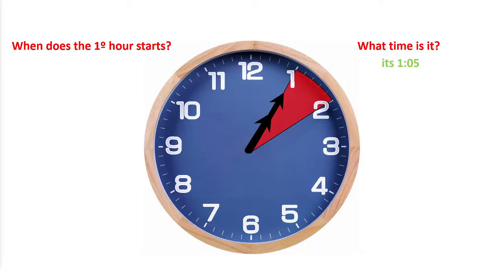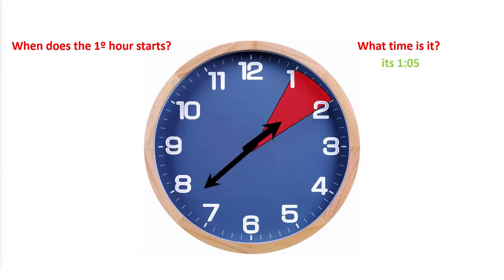The minutes change because of the taller pointer going through all the numbers. It starts the first hour with the smaller pointer and then keeps going, remaining the first hour until it reaches the second number, and so on. It is very simple to understand.